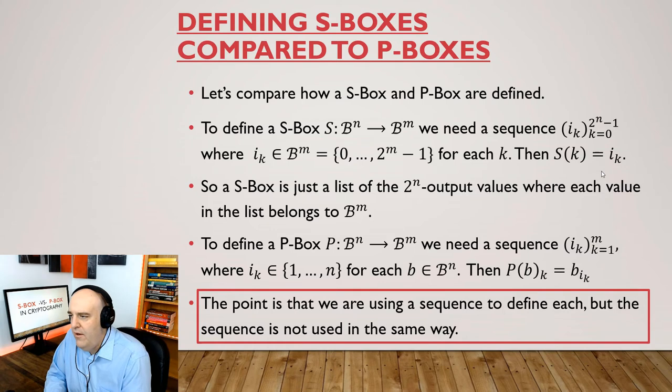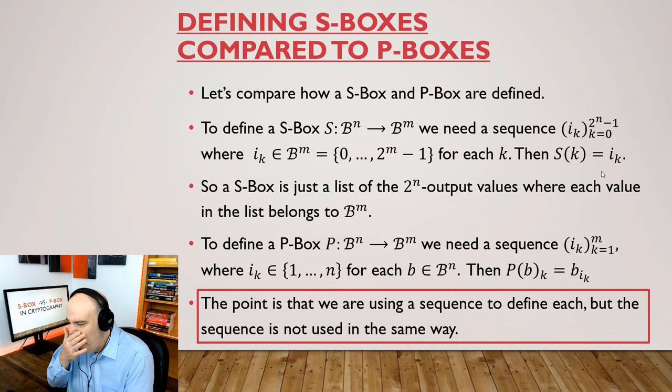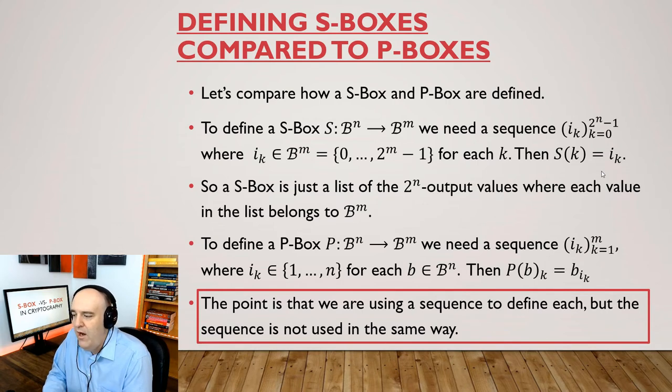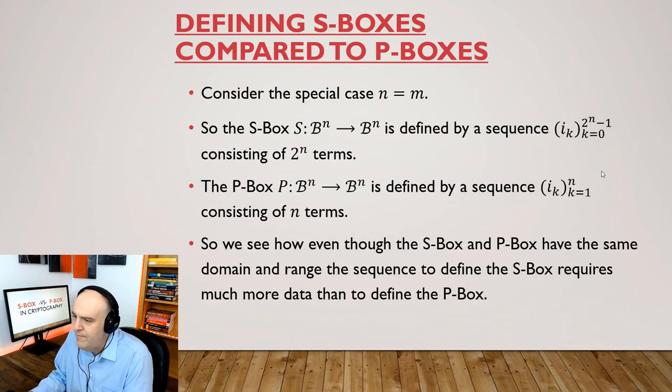So let's just compare a little bit S-Boxes to P-Boxes and see the difference. The point I want to make that if you have an S-Box, you're going to define it by a sequence. And same with the P-Box, you're going to define it by a sequence. One thing to notice is that an S-Box is just a list of the two to the N output values. And a P-Box is also described by a sequence, a list, but it's in a different way. So even though we're using a list to describe how P-Boxes and S-Boxes work, it's important to realize that we're using those lists in different ways.